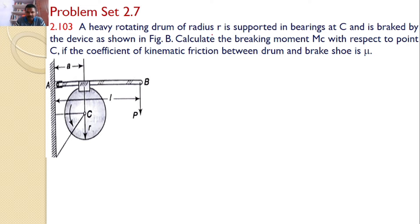A heavy rotating drum of radius R is supported in bearings at C and is braked by the device as shown in the figure B. Calculate the braking moment MC with respect to C.